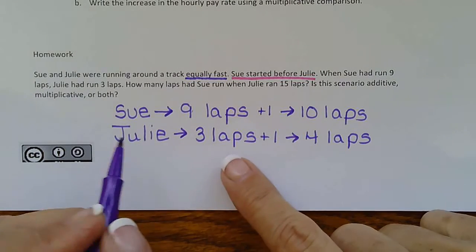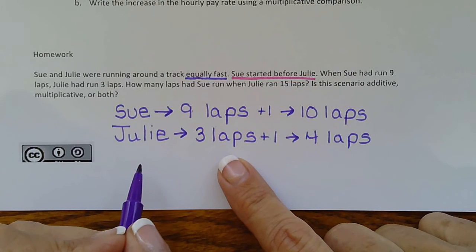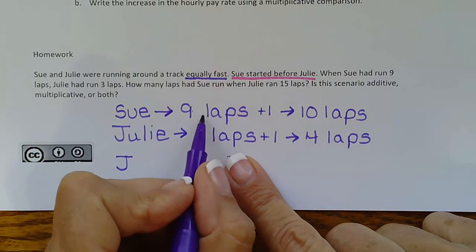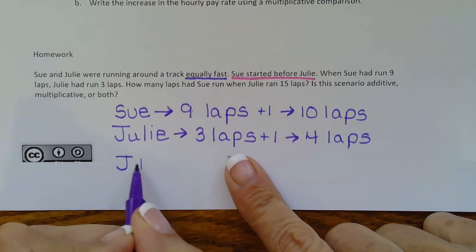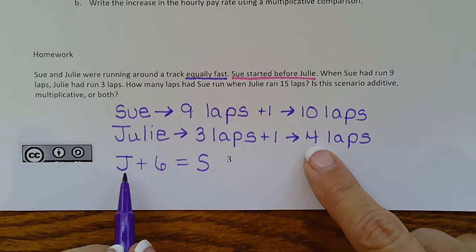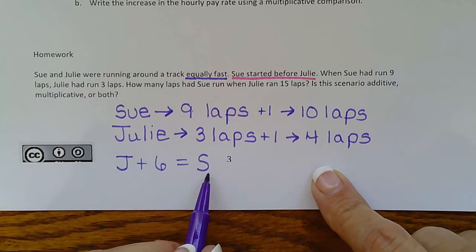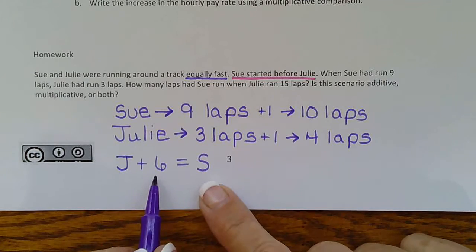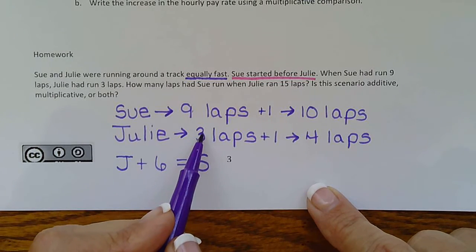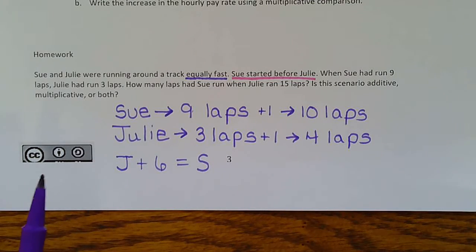So let's see if we can make up a scenario like we did in number eight. So Julie plus six laps equals Sue. Julie plus six laps equals Sue. So we can use that equation to help us. Or we could have done Sue minus six equals Julie. Sue minus six equals Julie. And it doesn't matter. They're the same thing.